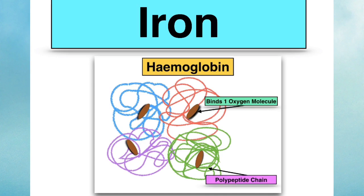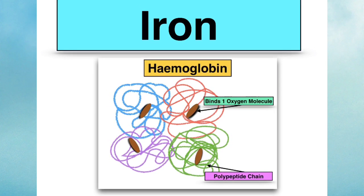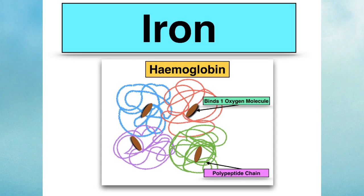Those four heme groups capable of binding one oxygen molecule each contain the element iron, and that's the reason why you need to take in iron, that trace element, in your diet.